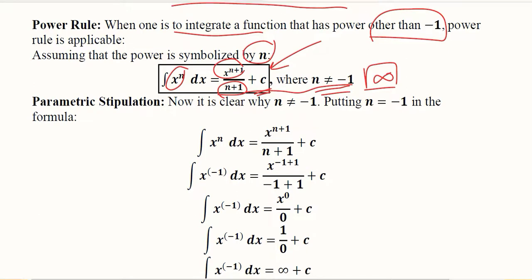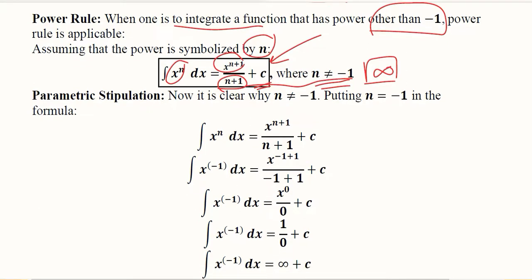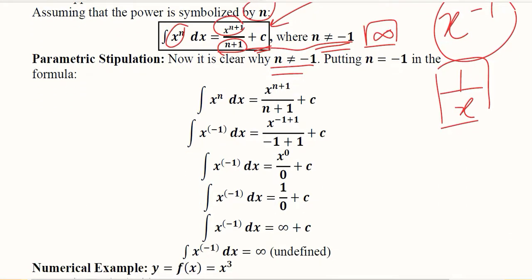So this is why we assume that n is not equal to minus one—that is, we cannot apply the power rule in this situation. The parametric stipulation explained in this series of steps shows why it cannot be equal to minus one. Because if we put minus one wherever n is, this can be accepted, but zero in the denominator with something in the numerator will give rise to infinity, which is of no meaningfulness in most situations in our economic analysis.